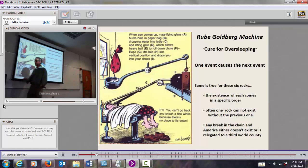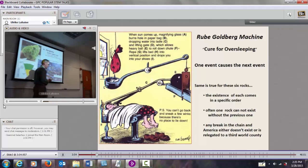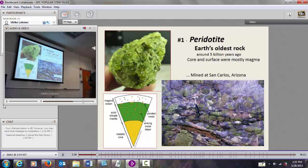Number one is peridotite, the Earth's oldest rock. It makes up all of this stuff. It is the most common rock inside of the Earth. We don't see it on the surface hardly at all. We have to have magma break through the solid silicate mantle and erupt onto the surface before we get to see that peridotite. The most famous location is in San Carlos, Arizona.